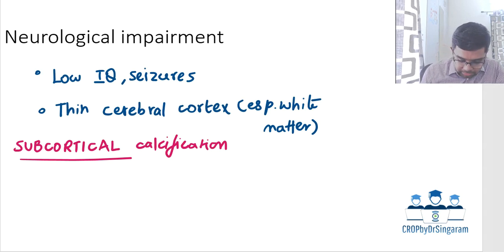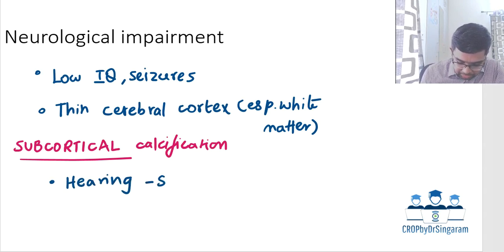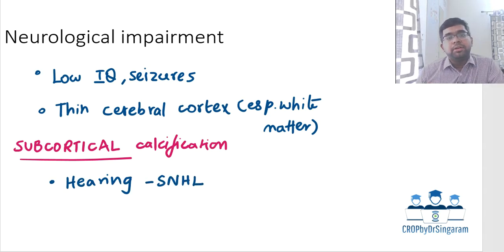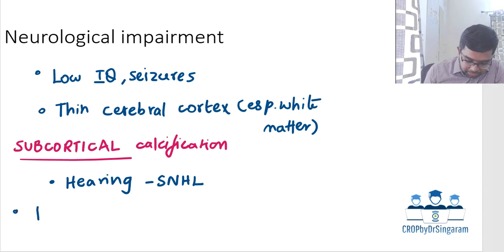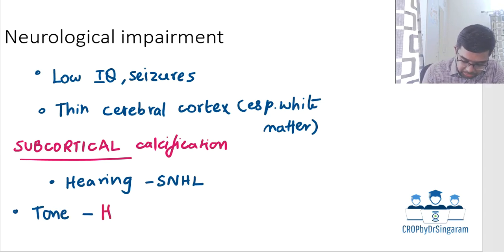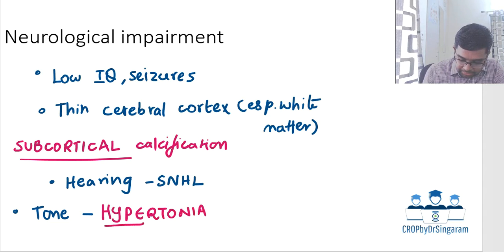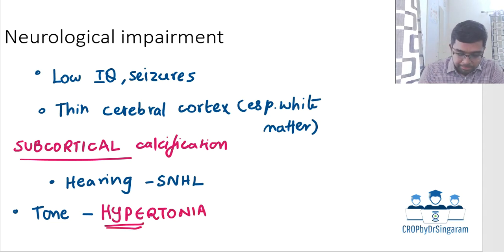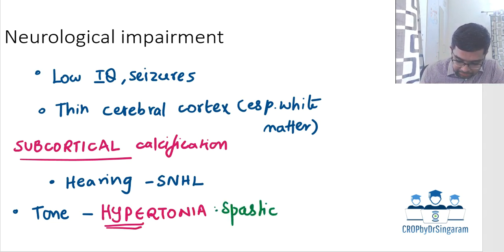Other manifestations include sensorineural hearing loss. Very importantly, this condition is associated with tone abnormalities and is commonly associated with hypertonia. While some cases show hypotonia, the characteristic finding is hypertonia — specifically spasticity.